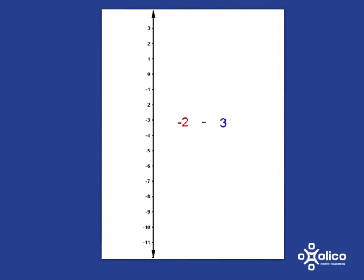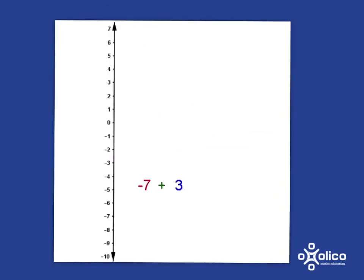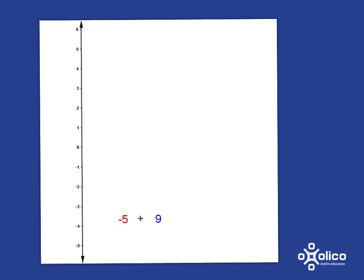What about negative 2 subtract 3? We start at negative 2, go down 3 steps, and that ends us at negative 5. So negative 2 subtract 3 gives us negative 5. What about negative 7 plus 3? We start at negative 7, but this time because it's a plus we're going up, and it's 3 steps up, which ends us at negative 4. Now, how about negative 5 plus 9? We start at negative 5, go up 9 steps — jumping 5 steps to 0, then 4 more steps — and so we end up at 4.